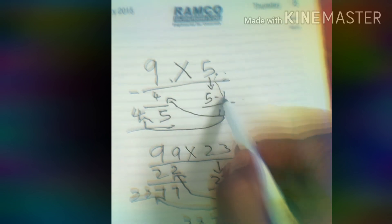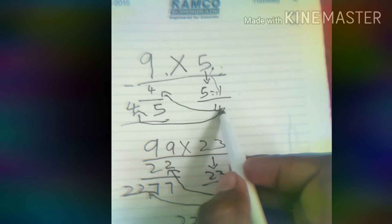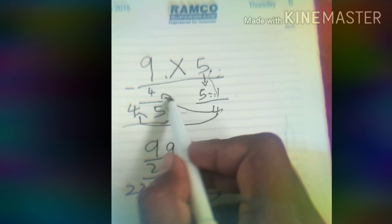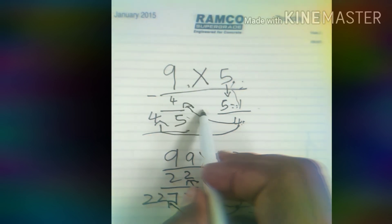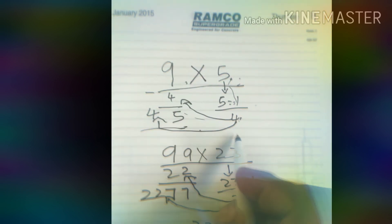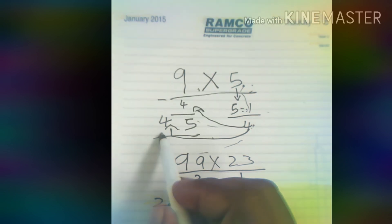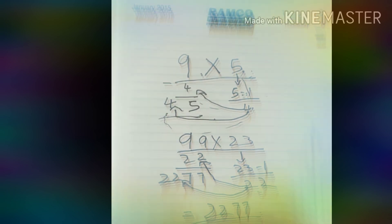Multiply by 5. Take 5 minus 1, which equals 4. Then subtract from 9, and it will become 5. This 4 will be carried out as 40, so 45 will be the result.